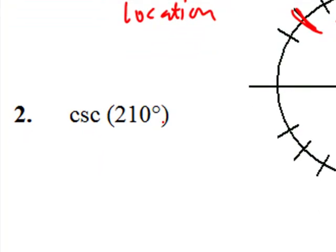Cosecant of 210 degrees. Let's see. Where is 210 degrees? It's a little bit beyond 180, excuse me. It's right here at the 30 degree mark beyond 180, 210 degrees. It's in the third quadrant.